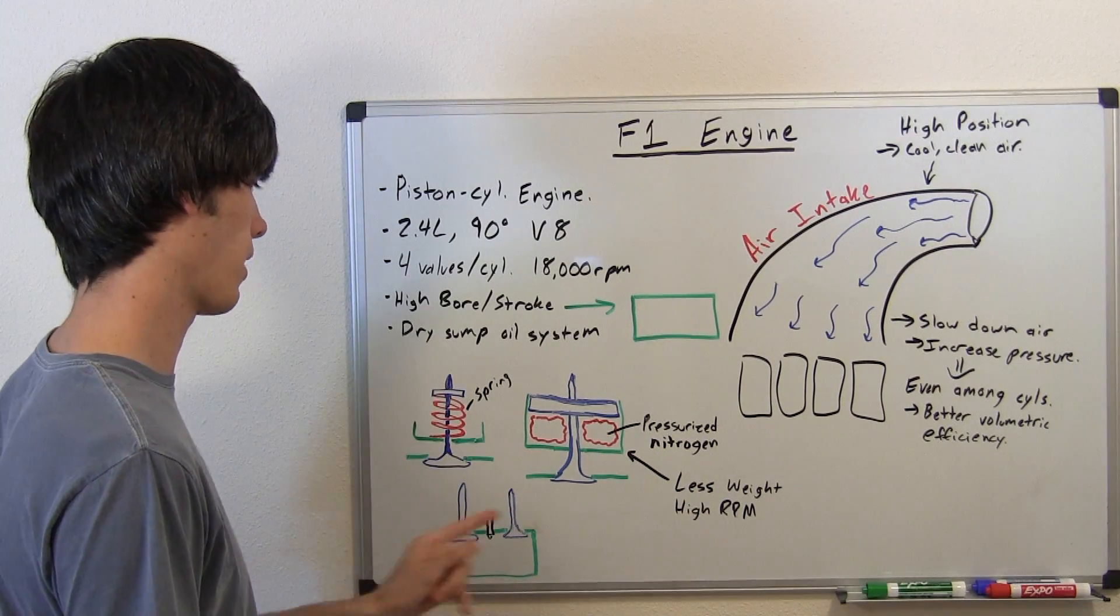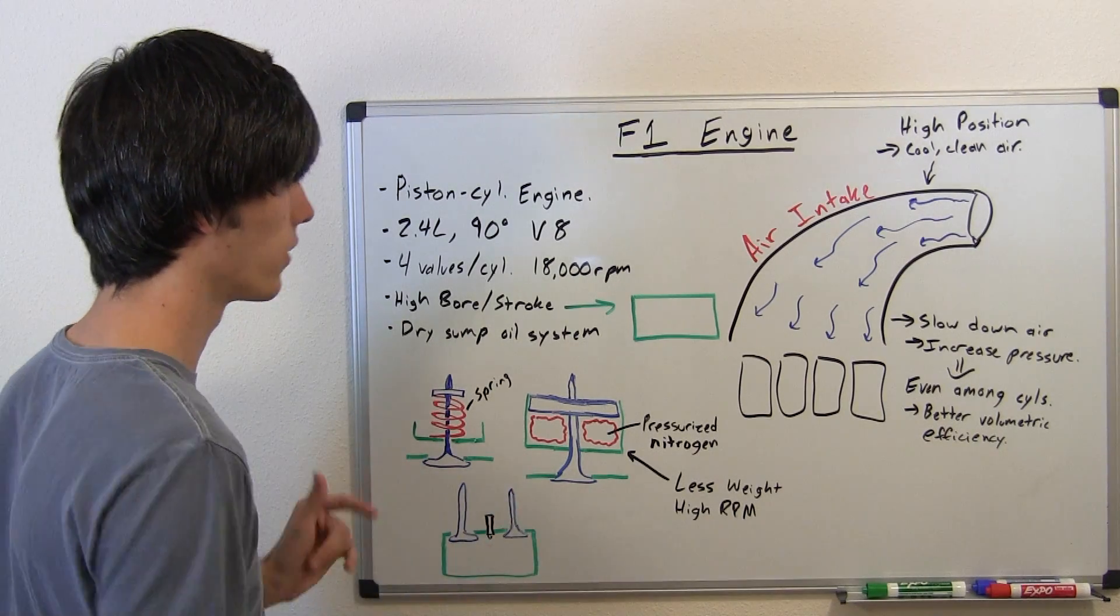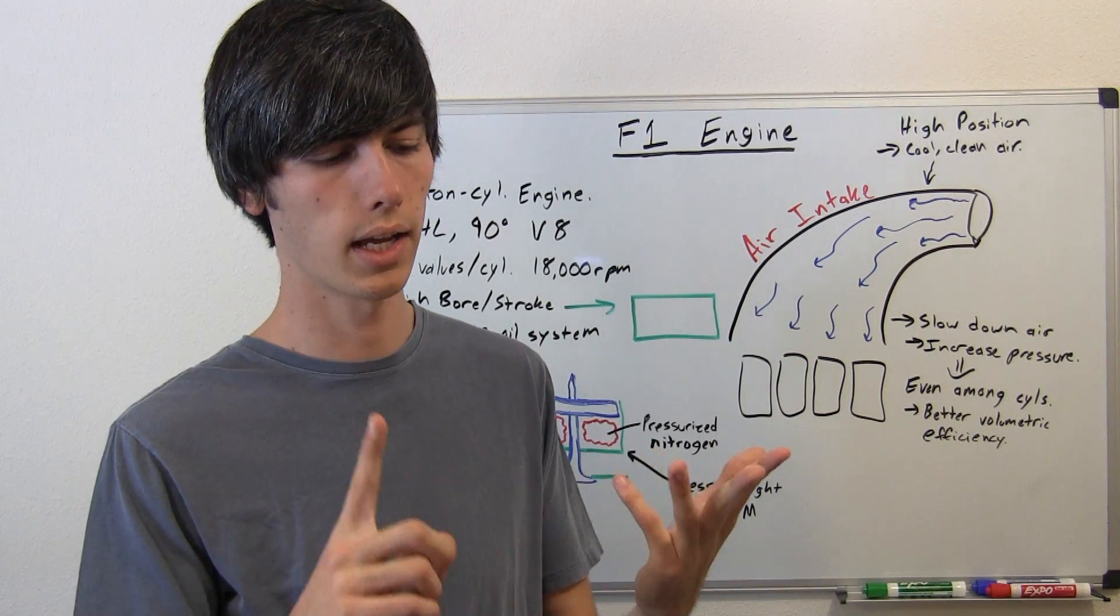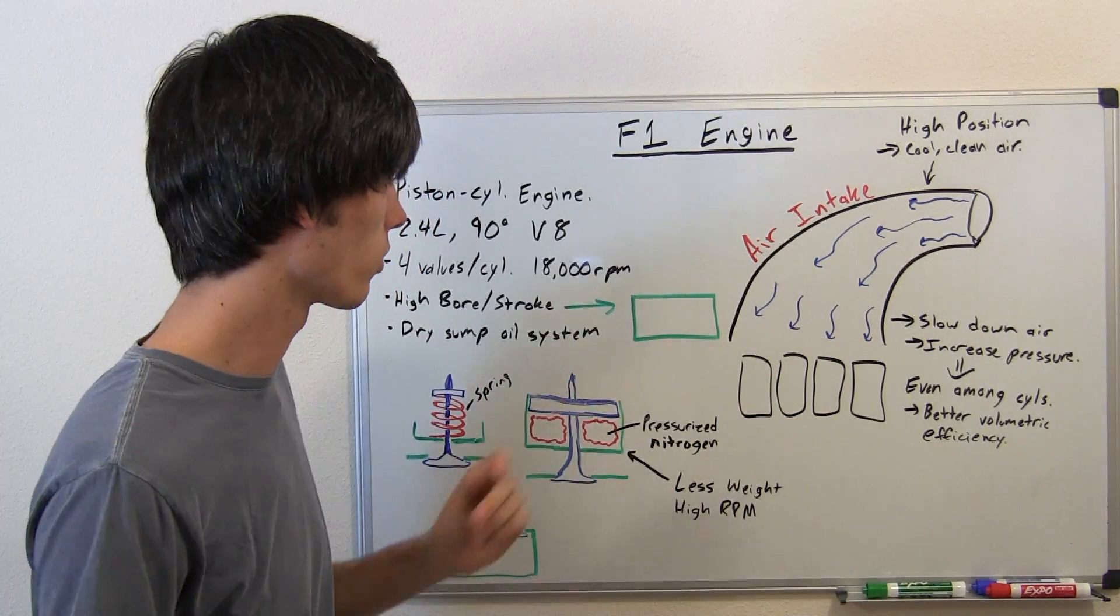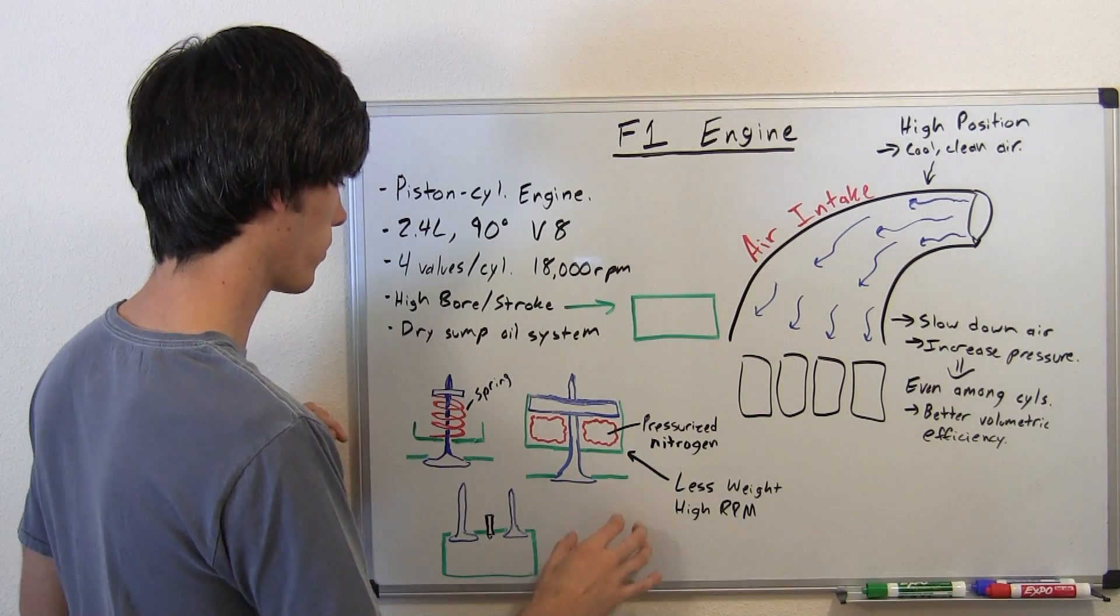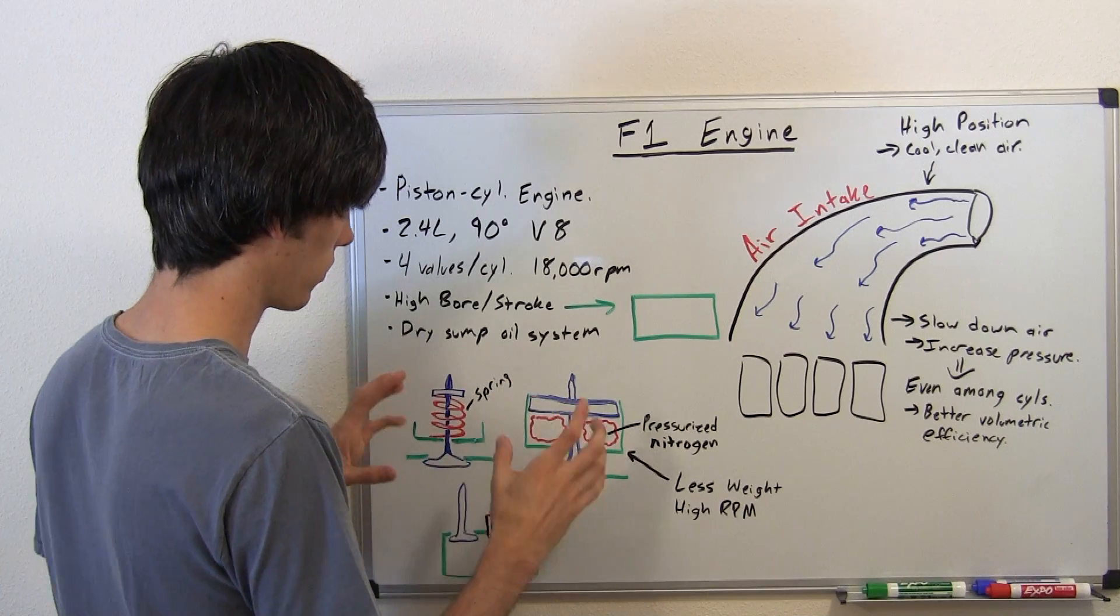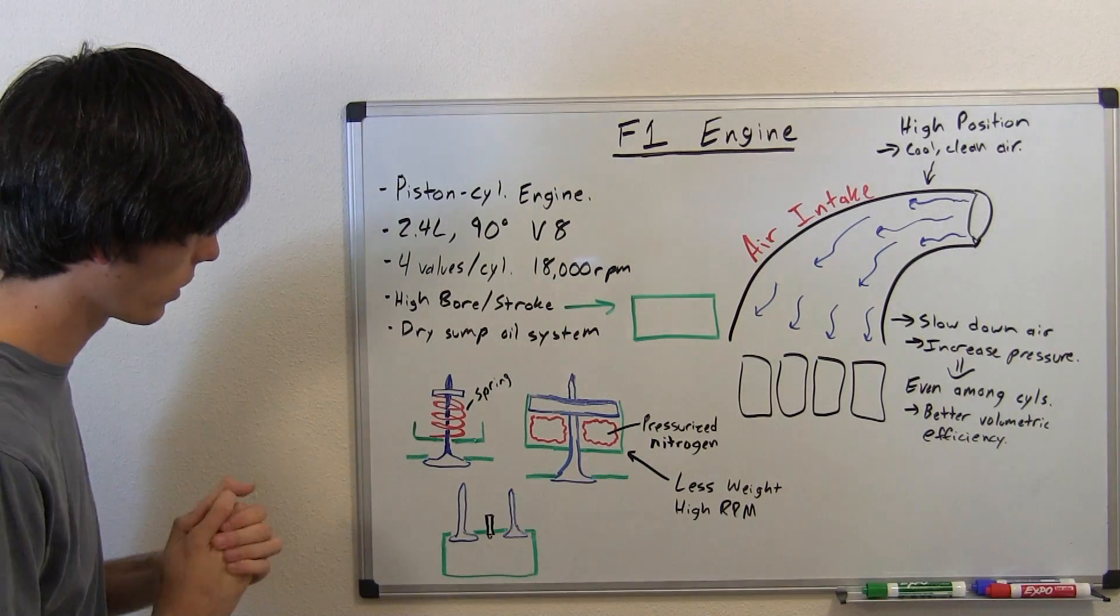Another difference you have with F1 engines is the valve train. So if you don't understand valve trains, I've got a video on dual overhead cam versus overhead cam versus overhead valve. Those are all the three options you'd ever want to look at. So for this, I'm just going to explain the valves themselves because this is a key difference between a typical engine and a Formula One engine.